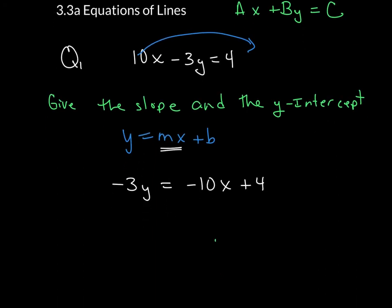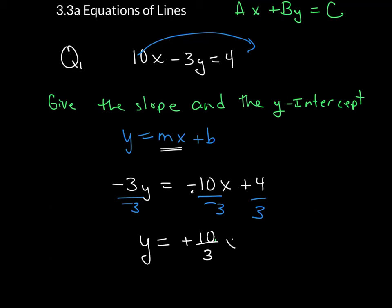The next step is to divide everything through by negative 3. Do not turn this into a decimal — you want to write it as a reduced fraction. So the final answer is y equals negative 10 over negative 3, which becomes positive 10 thirds x plus 4 thirds.